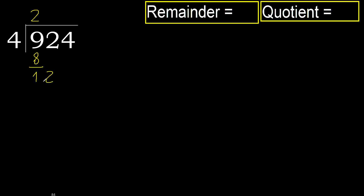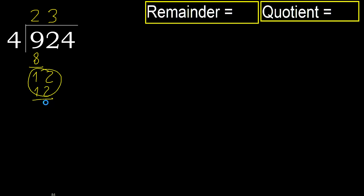Bring down the next digit: 12. 4 multiply by 4 is 16, which is greater. 4 multiply by 3 is 12, which is not greater. Subtract.